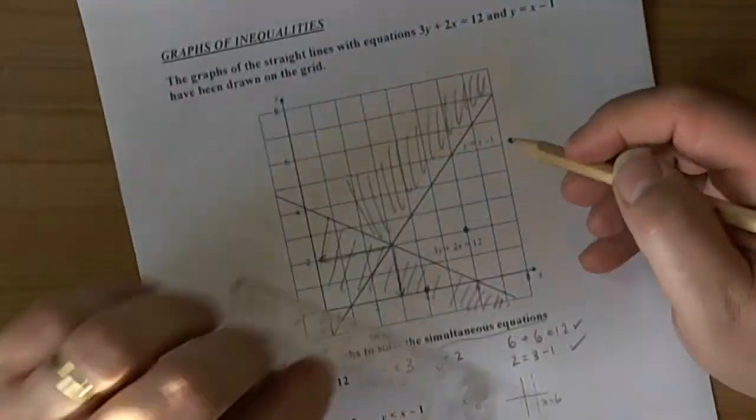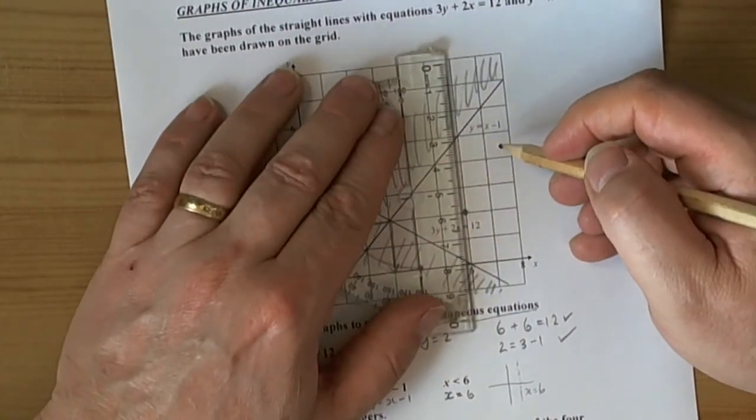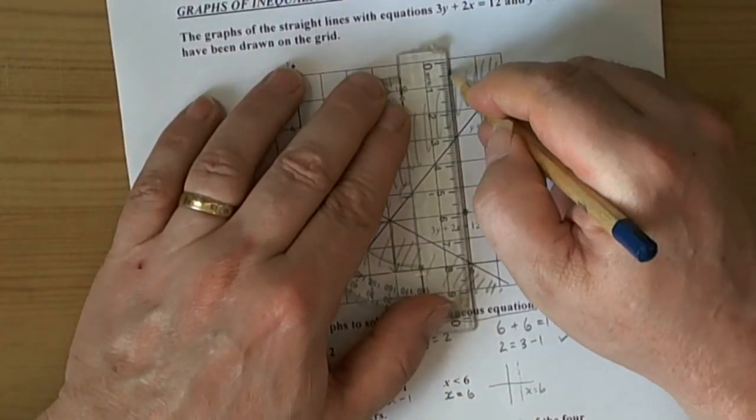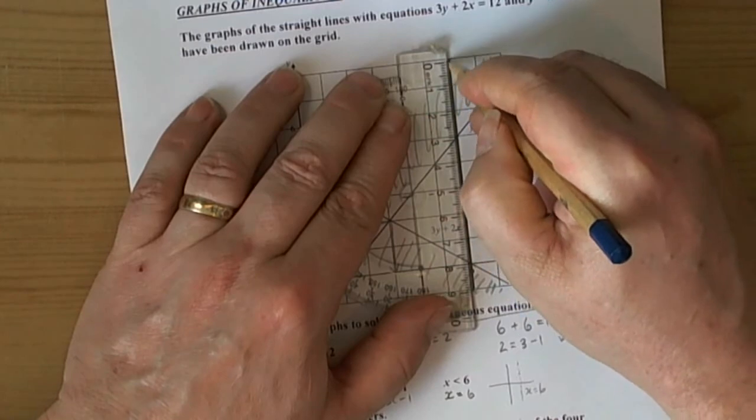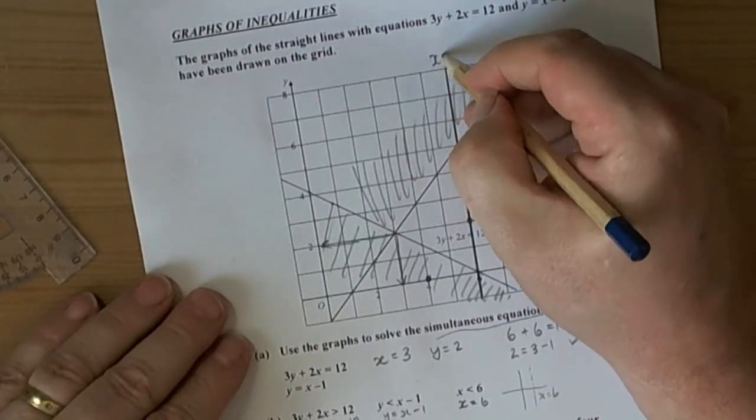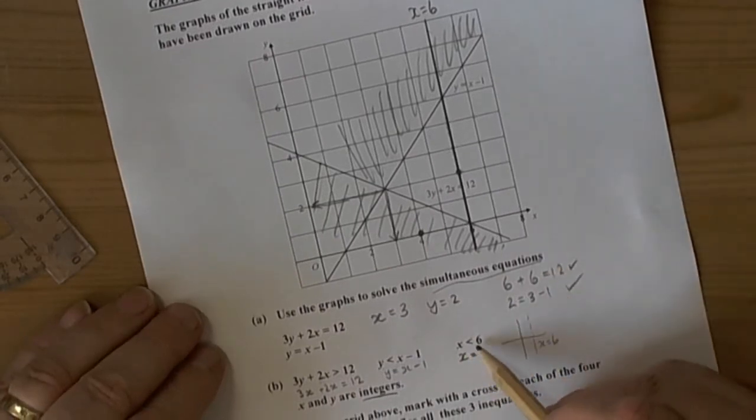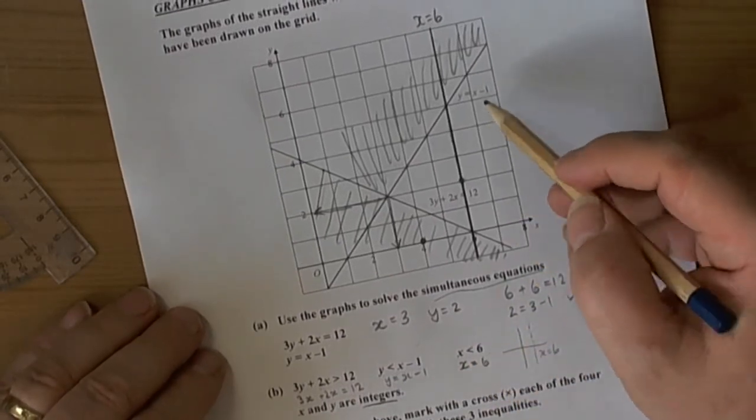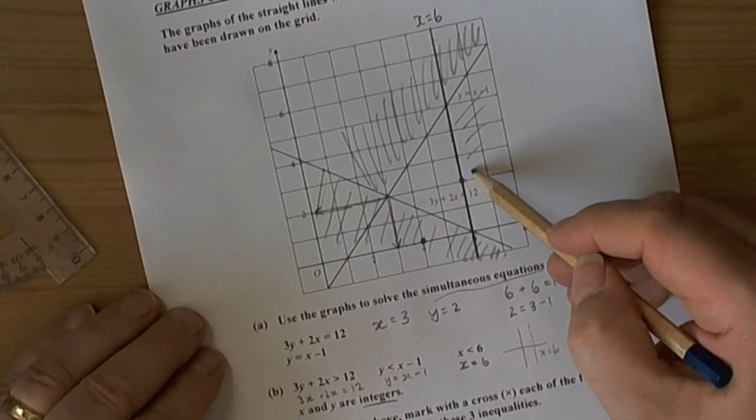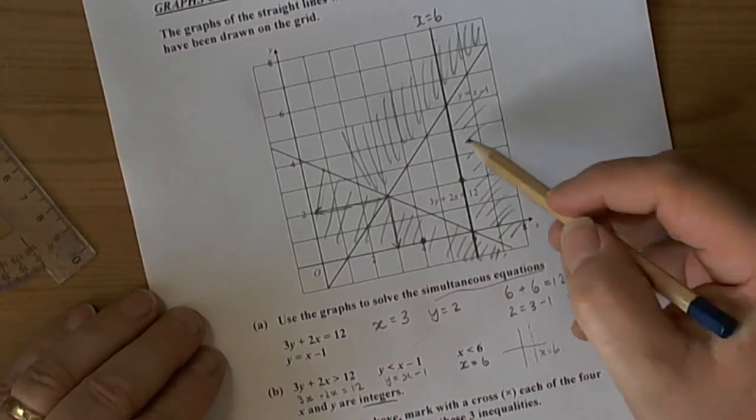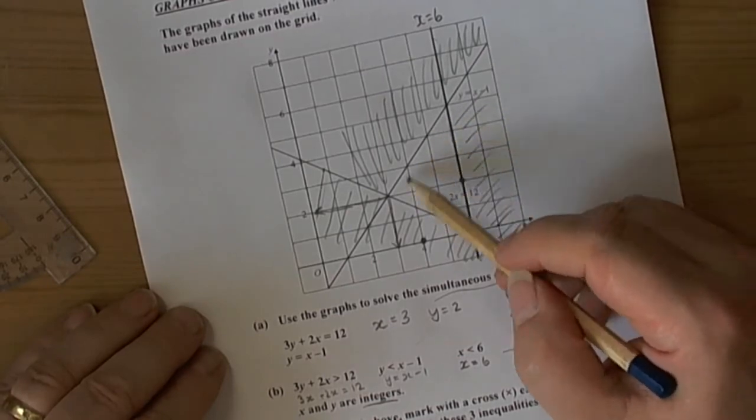We draw that on carefully with a ruler, making sure to show our method clearly. We mark x equals 6. Since x must be less than 6, we shade out the numbers bigger than 6. The answers will be somewhere in this triangle.